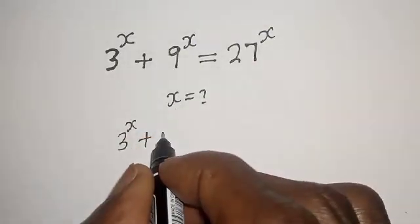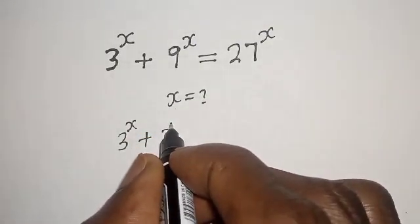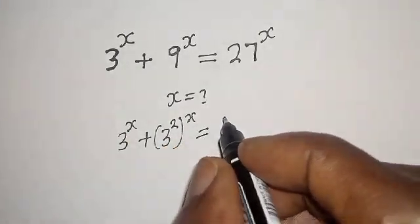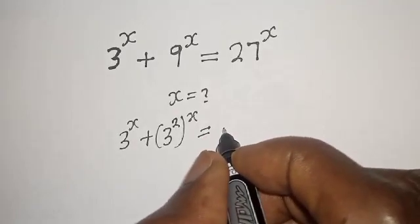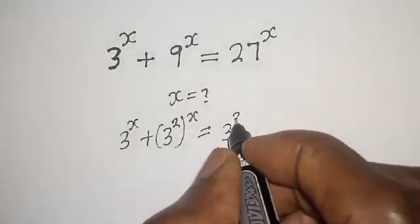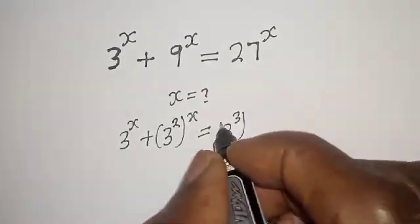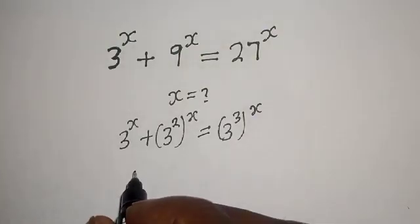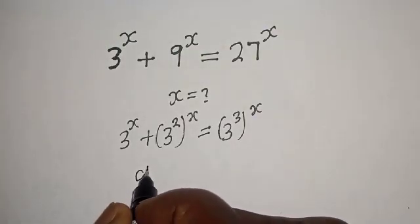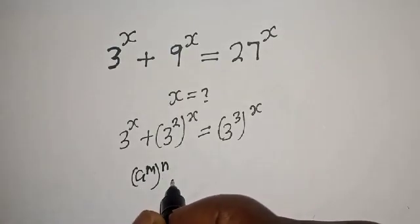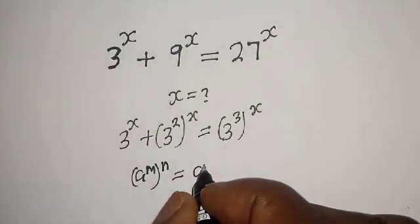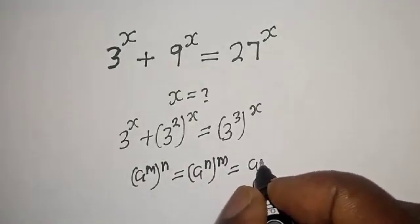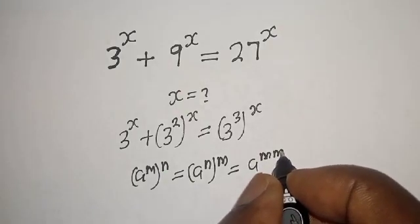3 raised to power x plus 9 raised to power s can be rewritten as 3 squared raised to power s, which is equal to 27, which can be written as 3 raised to power 3. Take note that a raised to power m raised to power n is equal to a raised to power m times n.